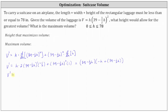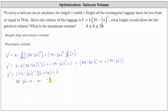Simplifying one more time: v prime equals (39 minus one half h) times negative h, or negative one h, plus negative one half h — that's negative three halves h — plus 39. There are no values of h where the derivative is undefined, so to find the critical numbers we set the derivative equal to zero. The derivative is zero where (39 minus one half h) equals zero, or when (negative three halves h plus 39) equals zero.